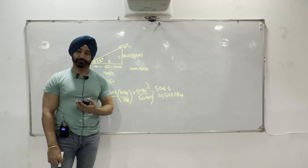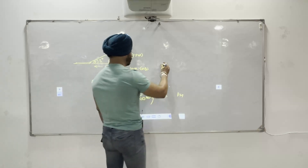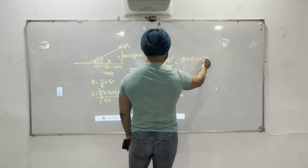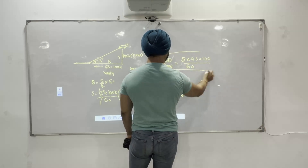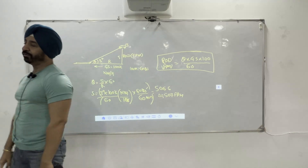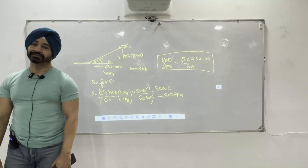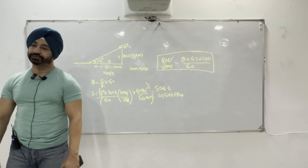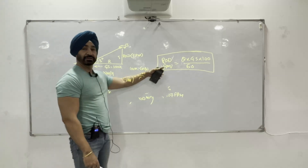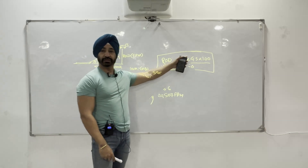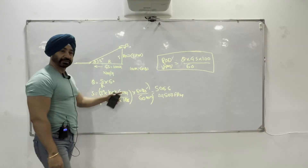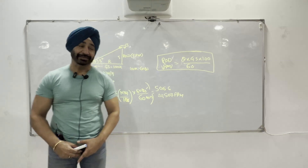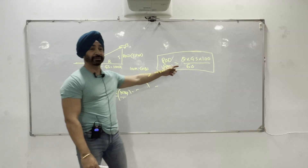In aviation books, this comes as a formula: rate of descent in feet per minute equals theta into ground speed into 100 divided by 60. I forget formulas, so I try to derive every formula. Once you've done it 2-3 times, you have it for life. This 100 in the formula comes from 6080 divided by 60, and that is what is given in the books.